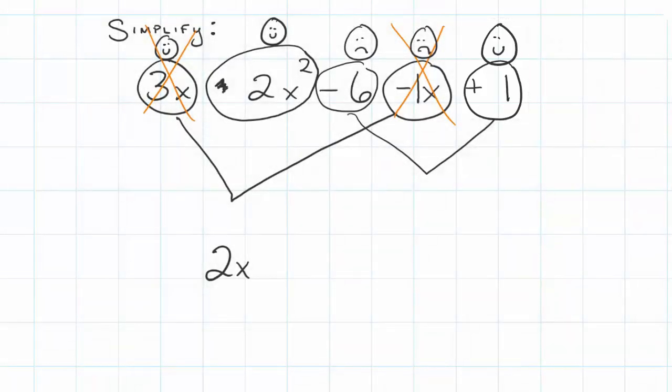These numbers do not have any variables with them so they can be put together and simplified as well. I have six negatives and one positive. I have way more negatives and so I know that I have five more negatives than positives.